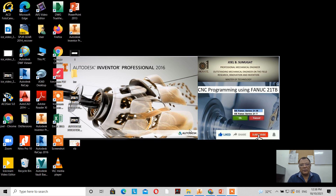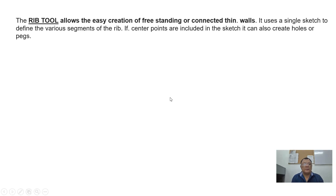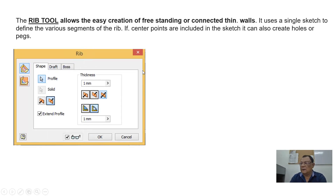Welcome back to our channel. Today let's take up another topic in Autodesk Inventor — the rib tool. The rib tool allows the easy creation of freestanding or connected thin walls. It uses a single sketch to define the various segments of the rib. If center points are included in the sketch, it can also create holes or pegs. This is how the rib tool works in Inventor.